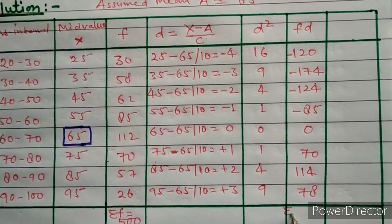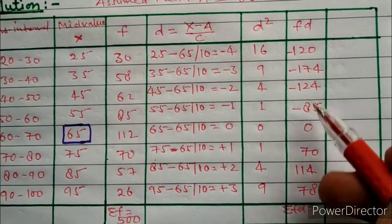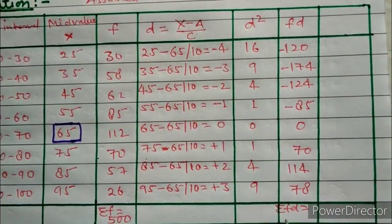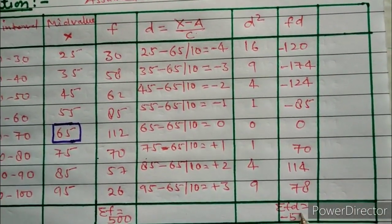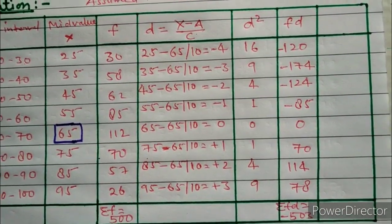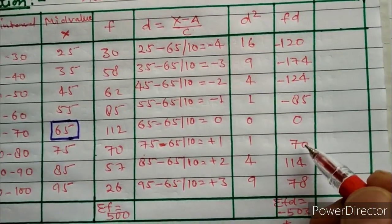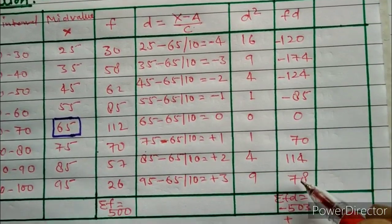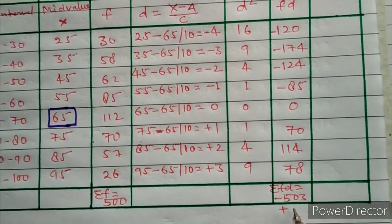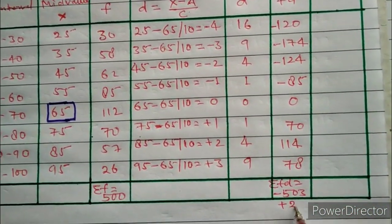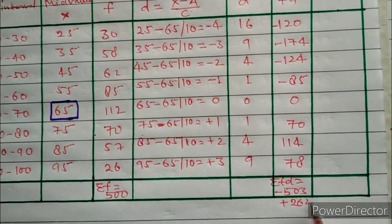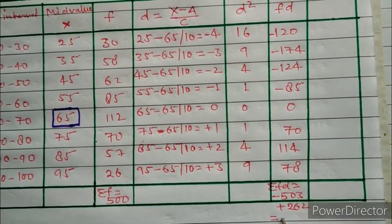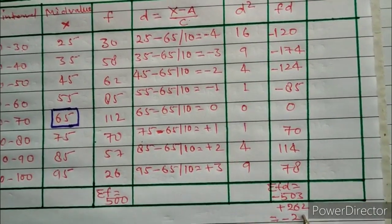Sigma fd: the total of negative values gives minus 503. Adding the positive values — 70, 114, and 78 — gives a total of 262. Combining both, sigma fd equals minus 241.